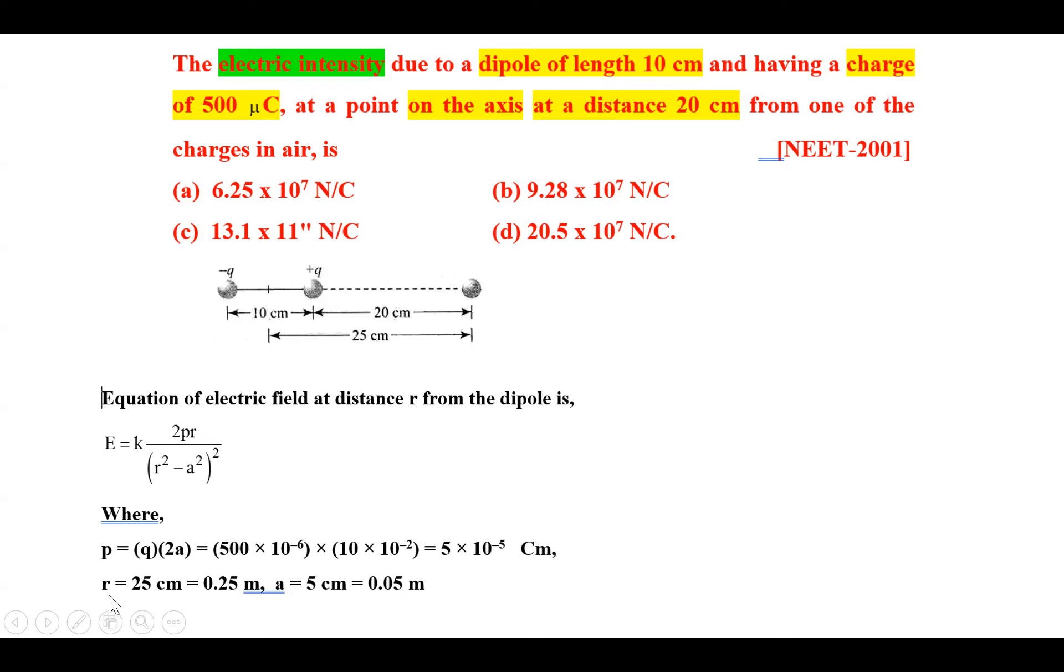The distance of the point r is 25 cm where we want to find electric field intensity, so that is 0.25 meter. A is 5 cm, so 0.05 meter. Now substitute all these values in this equation of electric field.